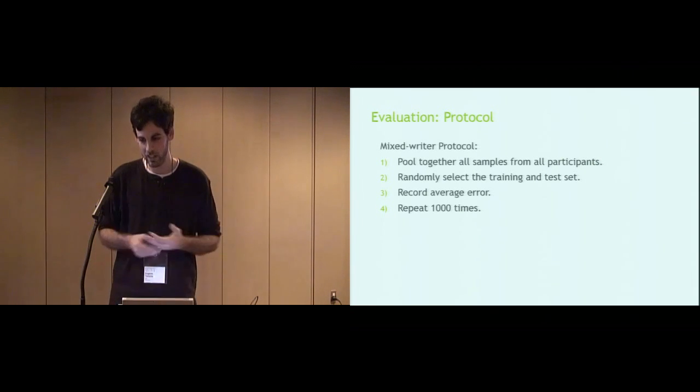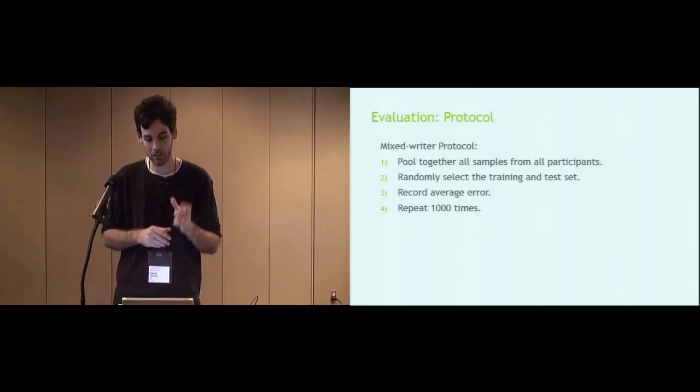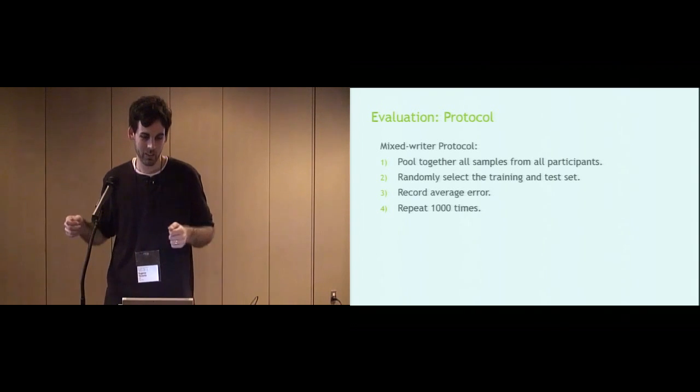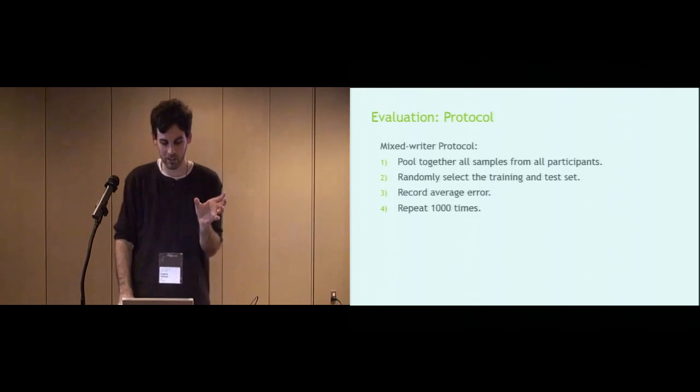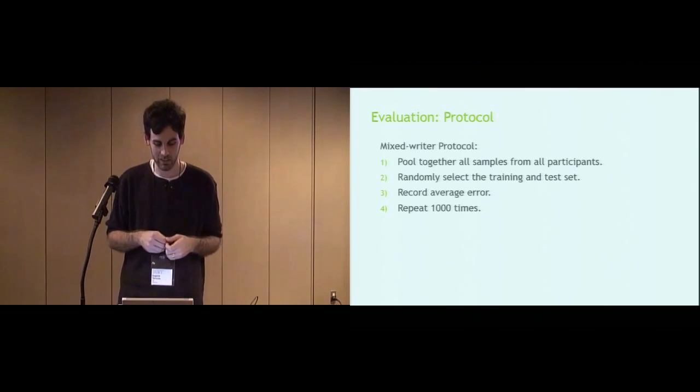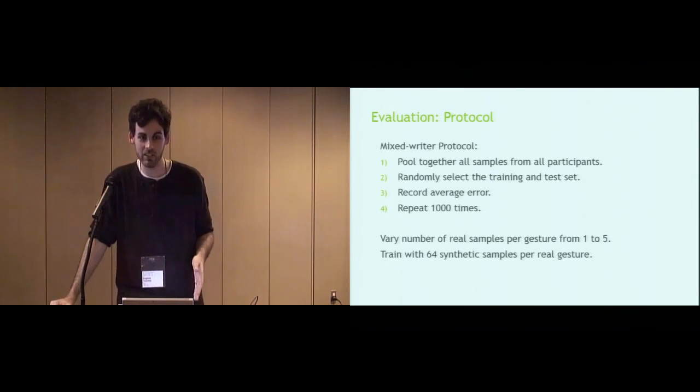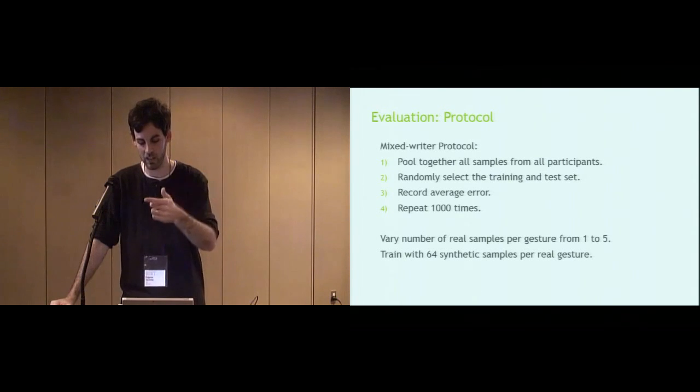So, now we can evaluate it. How well does it actually work? And the protocol we use is similar to what I described at the start, where we have different users or researchers that are contributing to a particular project, and they all want the recognizer to work well amongst themselves. So, we use the mixed writer protocol, where we pool all samples together from all participants and randomly select a training set, a test set, train the recognizer, throw the test set at it, get an average error. Repeat that a thousand times for a point of interest and get a grand average error. Some points of interest, different recognizers on different data sets, where we vary the number of real training samples provided from one to five, and if we're using synthetic data, for each real sample that's given, we generate 64 synthetic samples.